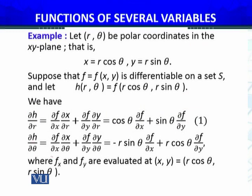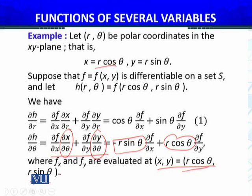Similarly, ∂h/∂θ by using chain rule: ∂f/∂x · ∂x/∂θ. That is the difference, because differentiating with respect to θ, cos becomes -sin θ, so it's -r sin θ. ∂f/∂x as it is, because f is not specifically given, plus ∂y/∂θ which is r cos θ, ∂f/∂y as it is, where fx and fy are evaluated at (x, y) = (r cos θ, r sin θ). If f is given, then the partial derivatives are evaluated at this point, which in previous modules was u₀, which was g(u₀), this was x₀, g(u₀).